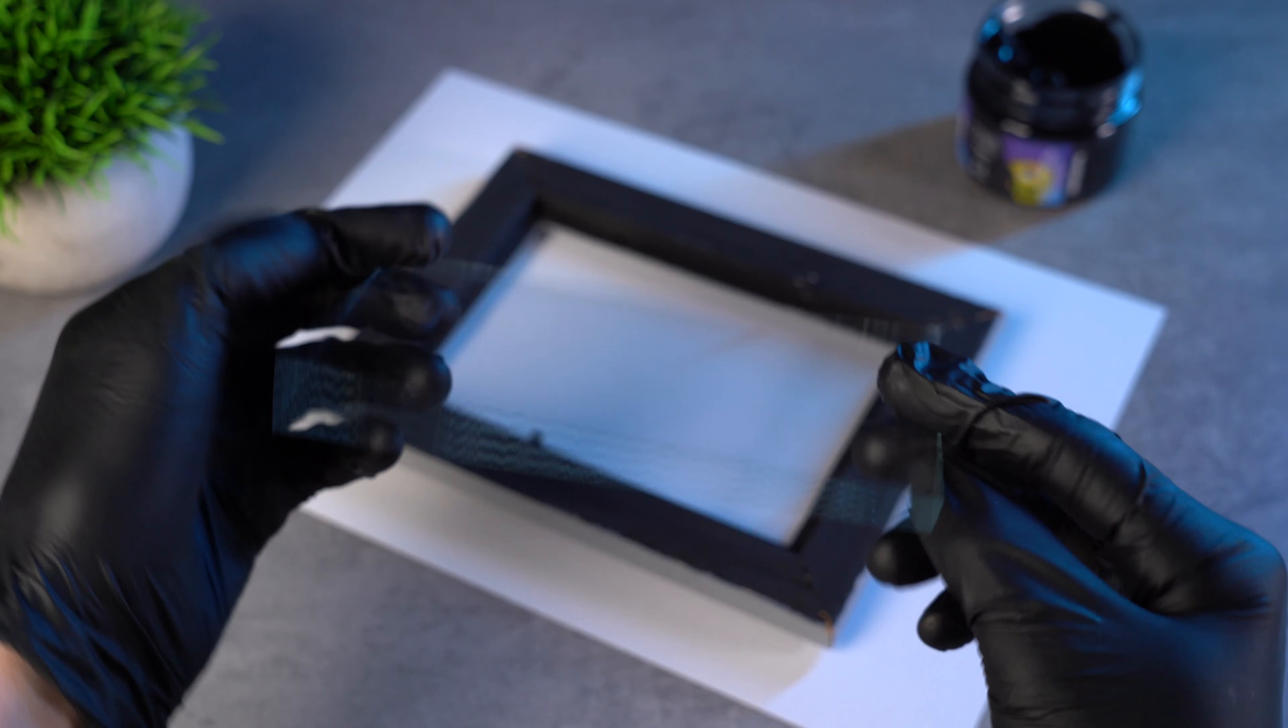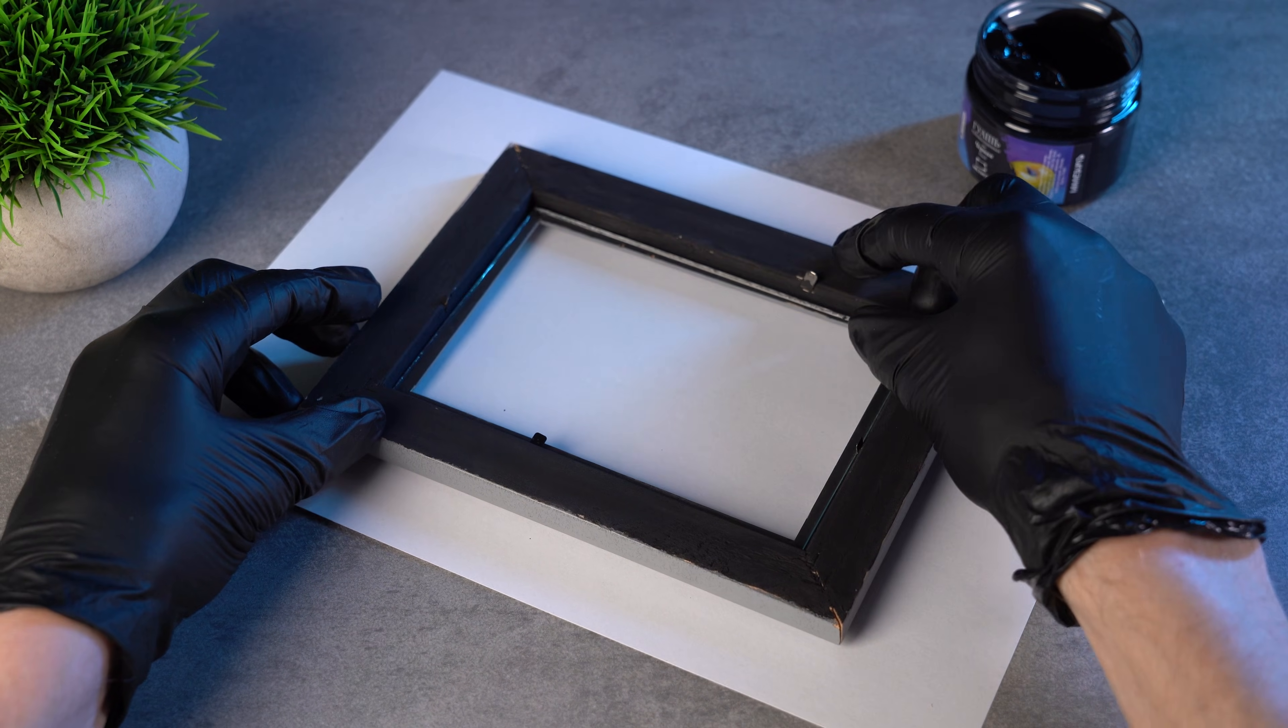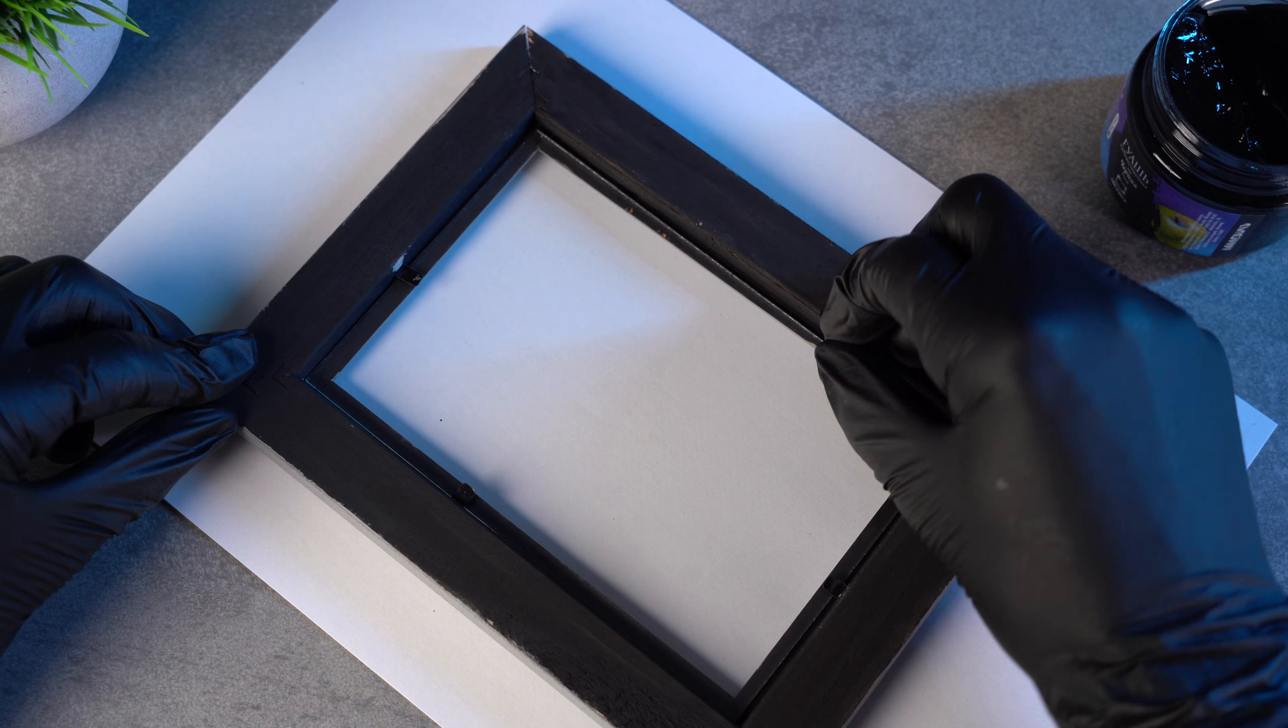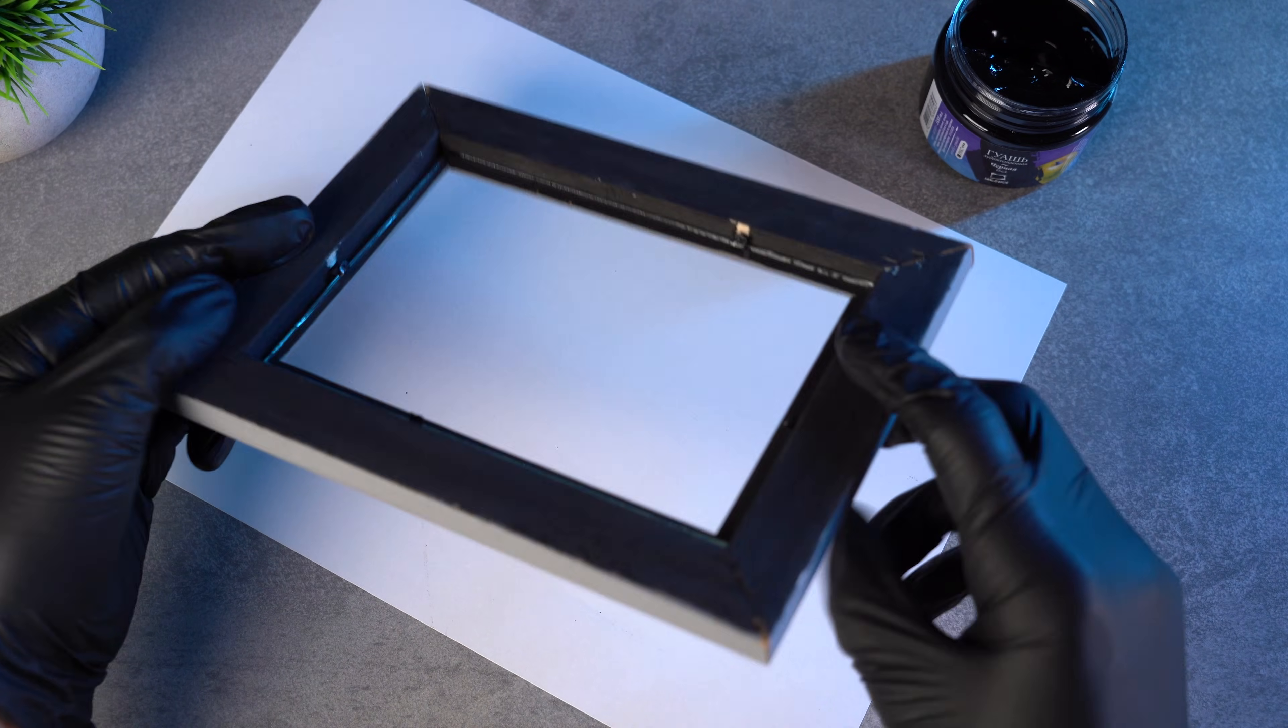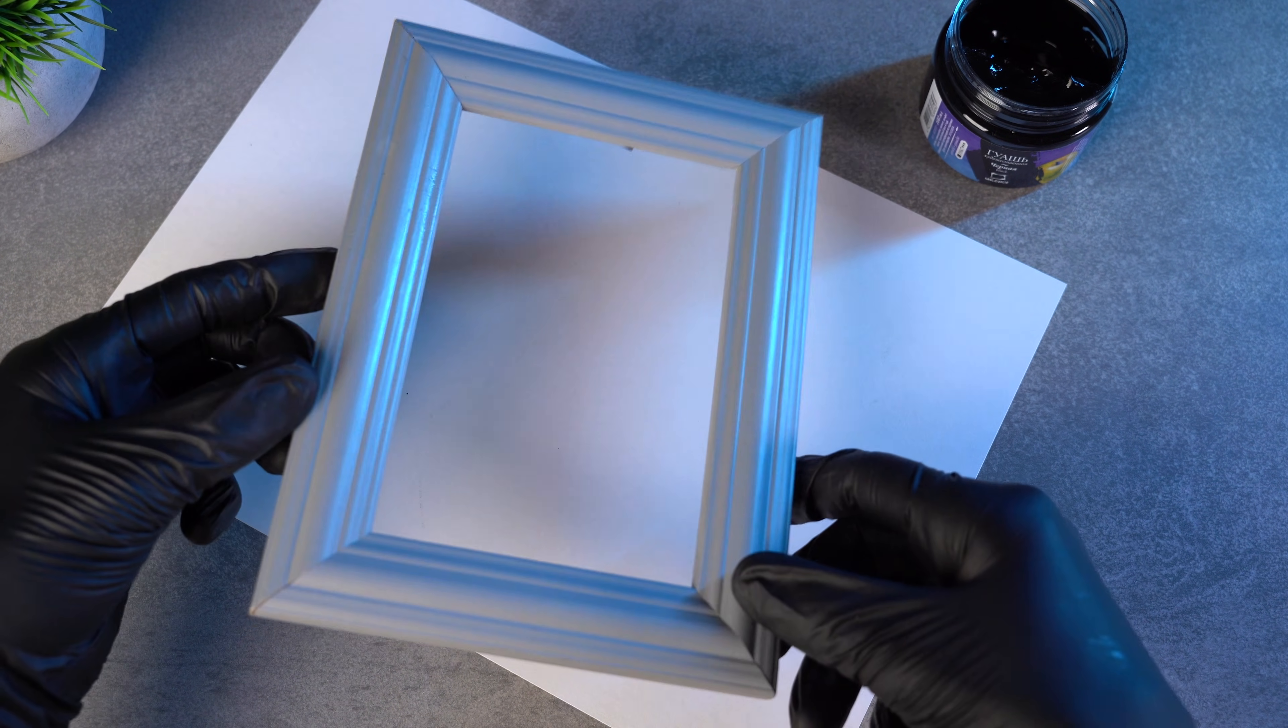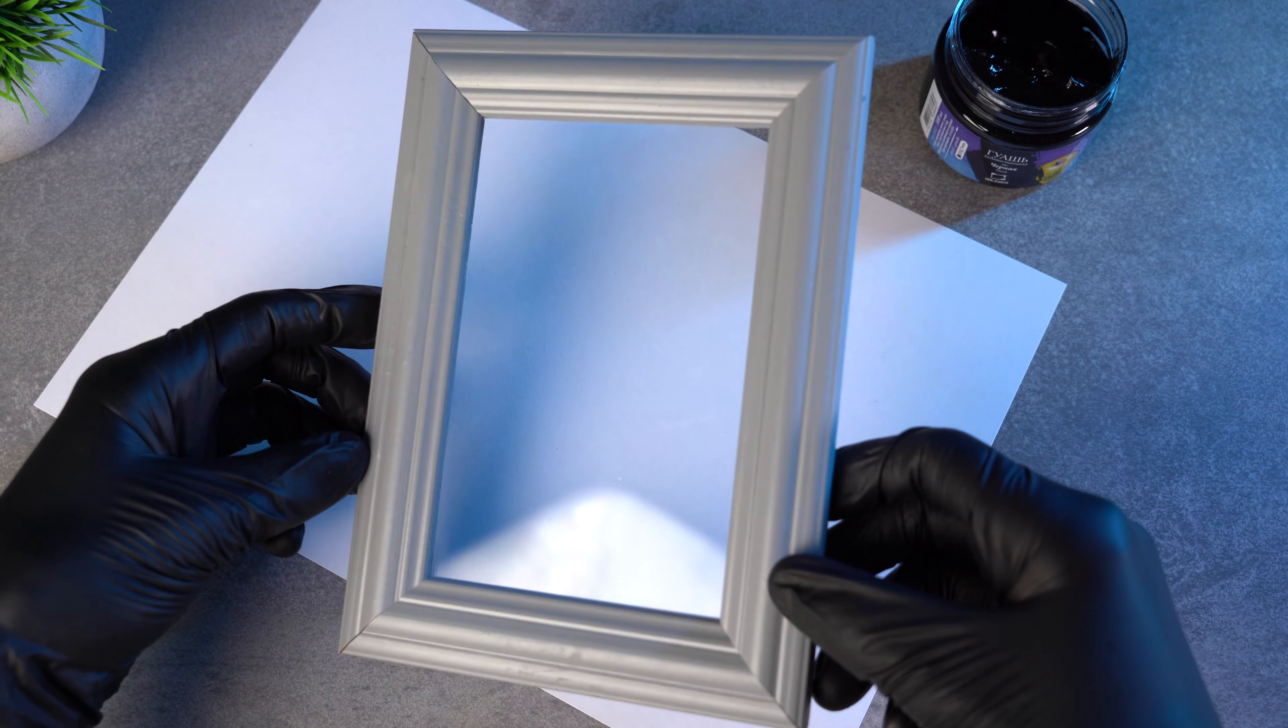Once the paint is dry, put the glass back in and secure it with the tabs. Make sure the tabs aren't visible through the glass. If they stick out too much, trim the ends with cutters, or bend them down with pliers. Let's keep going!